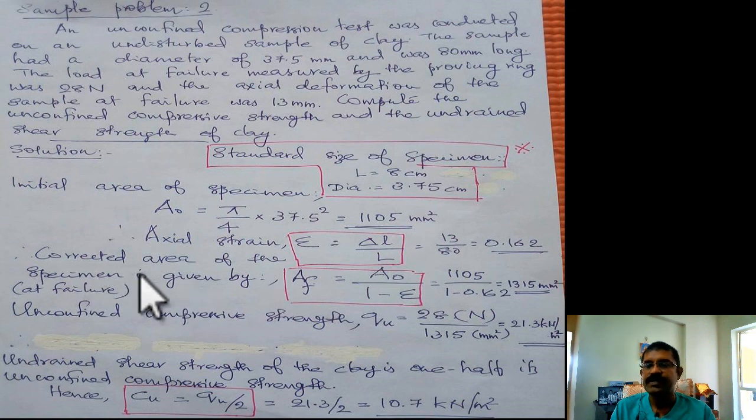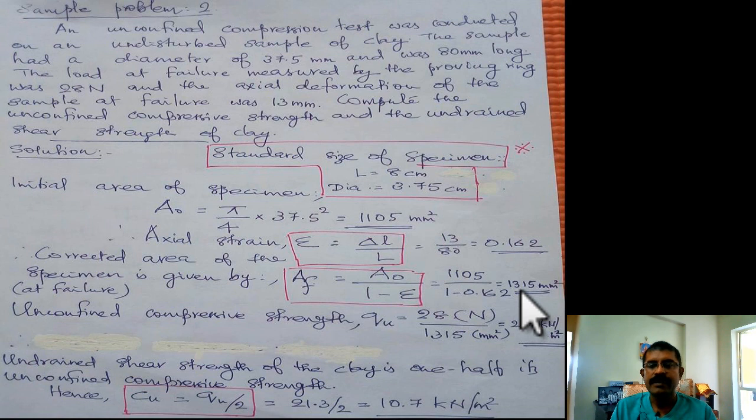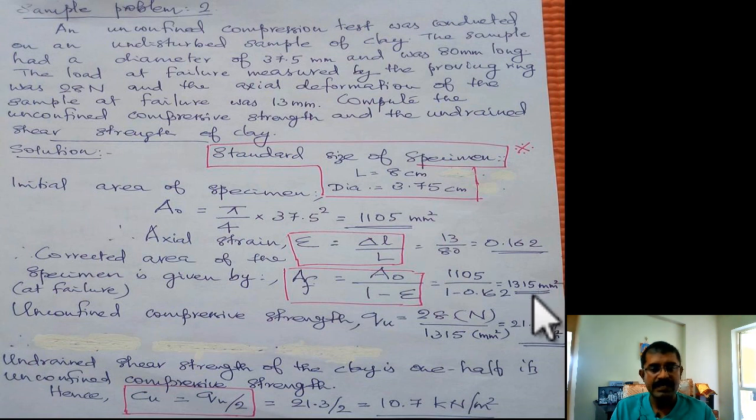The corrected area of the specimen can be found by the expression, corrected area means area at the failure. Initial area divided by 1 minus epsilon, epsilon is the axial strain. You substitute the values, you will get the specimen area, the corrected area at the failure as 1315 millimeter square.